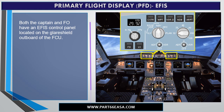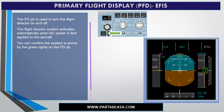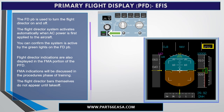Both the captain and first officer have an EFIS control panel located on the glare shield outboard of the FCU. The outer portion of this panel enables the pilot to exercise control over certain PFD functions. The barometric reference knob is used to control the altimeter setting; the current altimeter setting is displayed directly below the altimeter on the PFD. The outer ring of the knob is used to select either inches of mercury or hectopascals, also known as millibars. The knob is pulled to set standard altimeter, and pushed and turned left or right to set the QNH. The flight director push button is used to turn the flight director on and off. The flight director system activates automatically when AC power is first applied to the aircraft; you can confirm the system is active by the green lights on the FD push button. Flight director indications are also displayed in the FMA portion of the PFD.